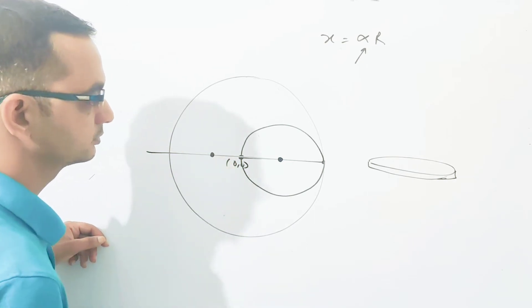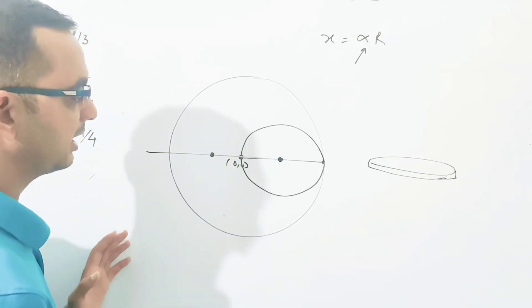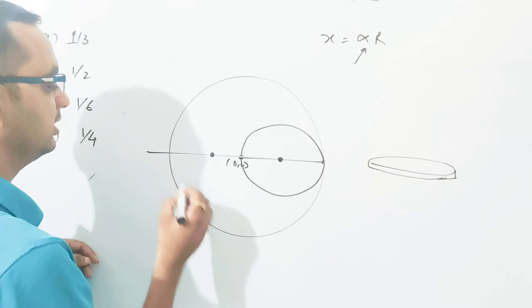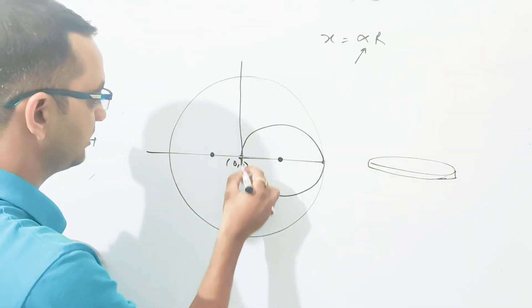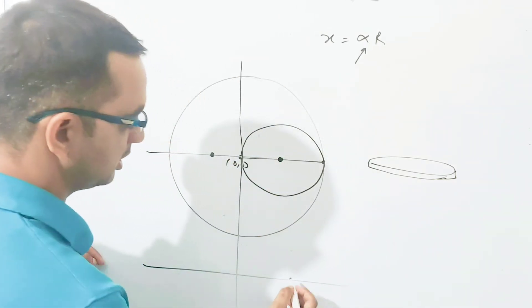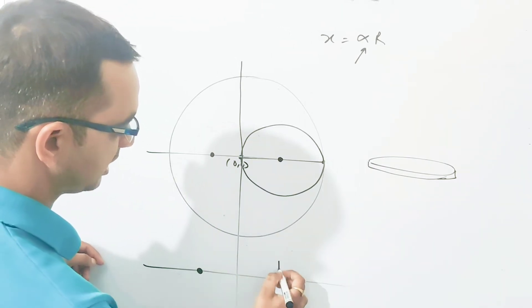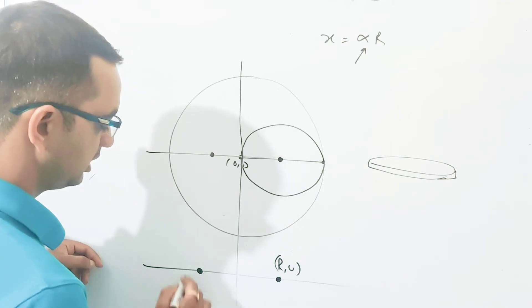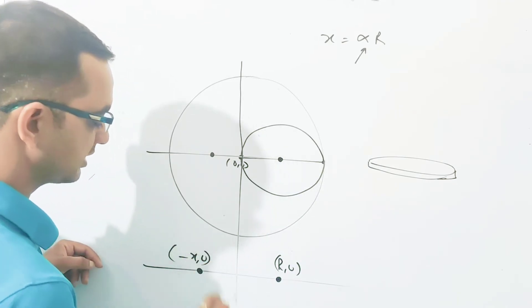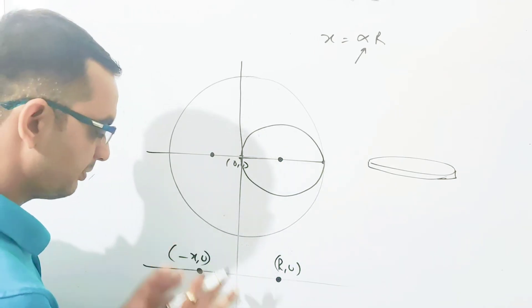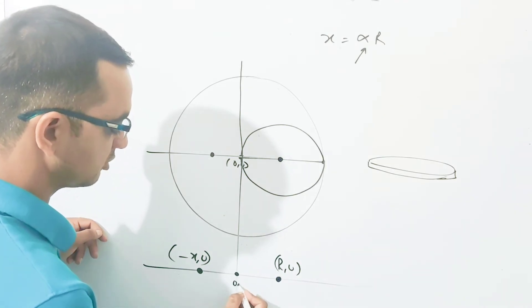If we plot this on a number line, one body is a particle and another is a particle. This particle has coordinate r,0. This particle has coordinate minus x,0. And we know that the center of mass is at 0,0.